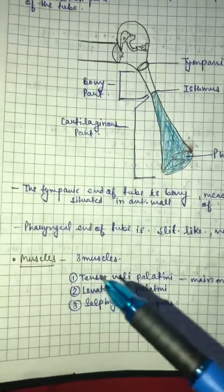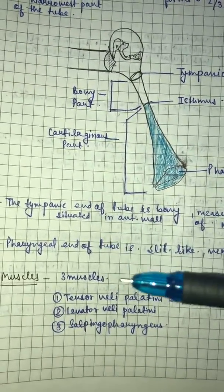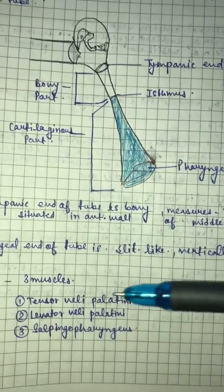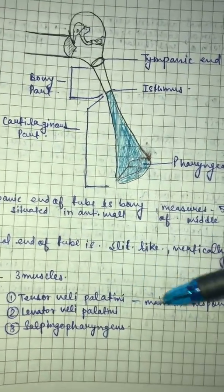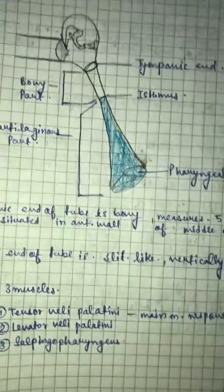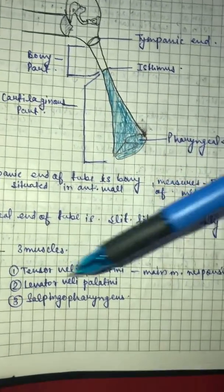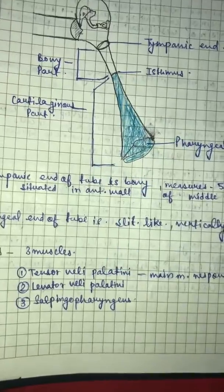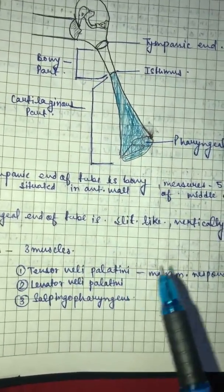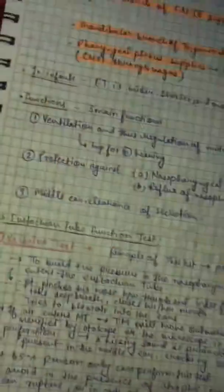Then muscles. There are three muscles in which one muscle is very important, tensor veli palatini. This is the main muscle responsible for opening Eustachian tube. Then the other muscles is levator veli palatini and salpingopharyngeus. So tensor veli palatini is the main muscle which opens the Eustachian tube.